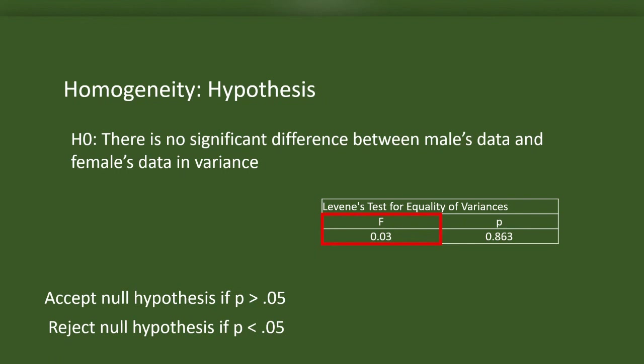This is the result of Levene's F test for equality of variance. Here F is a coefficient that indicates whether the data is homogeneous or not. Next to the coefficient is p or probability. Here p is greater than 0.05, that means there is no difference between males' data and females' data variance. In other words, the data is homogeneous.